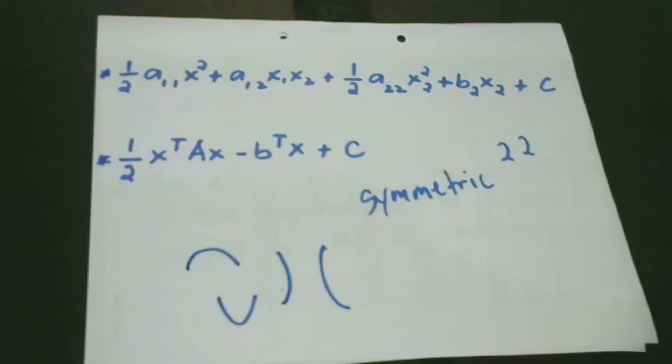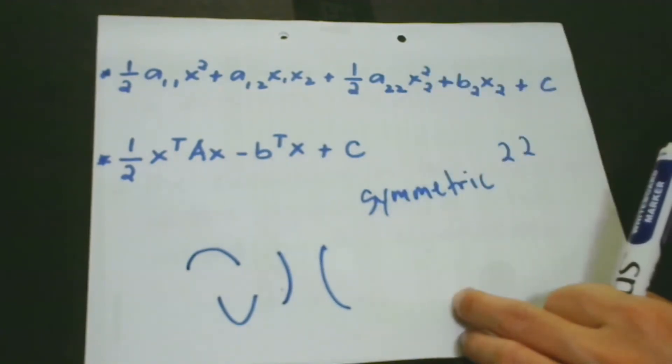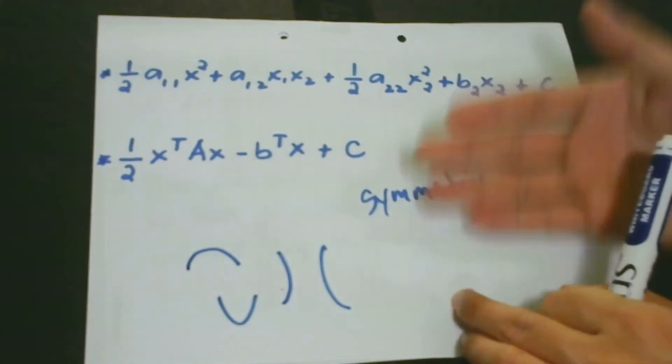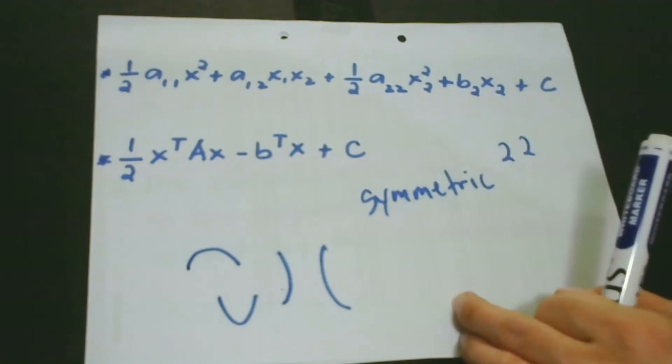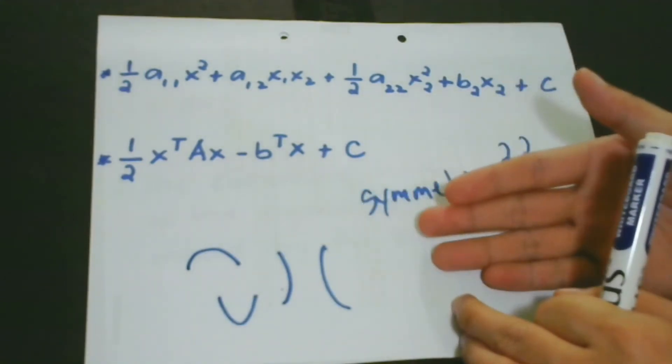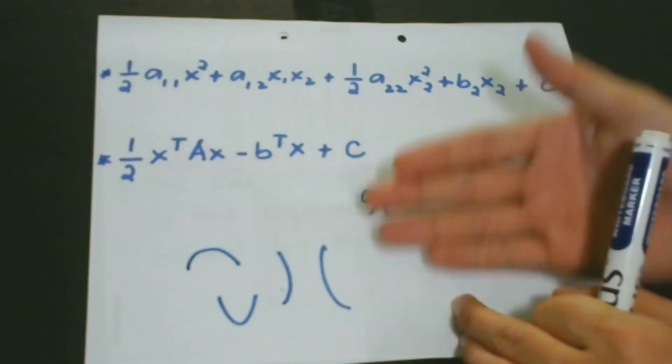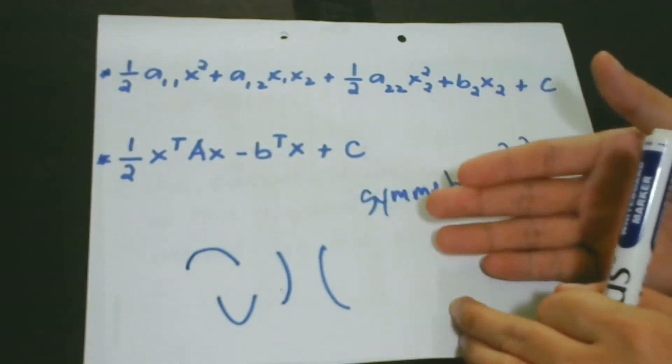The most important question that we have to deal with is how exactly the curvature is determined by the Hessian. The answer to this question centers on the relationship between the shape of the quadratic form and the Hessian eigenvalues and eigenvectors.